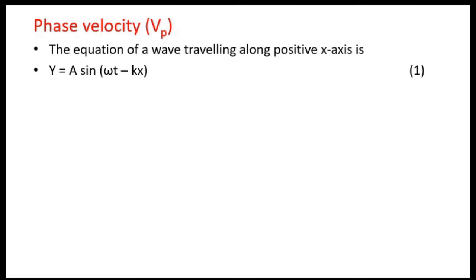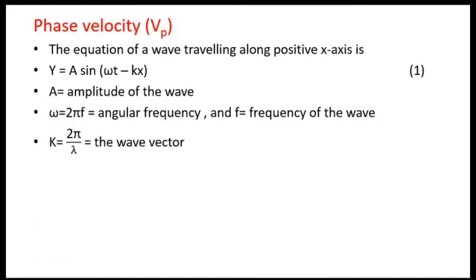We are familiar with the equation of a wave travelling in the positive x-axis direction. That wave is given by y = A sin(ωt − kx), equation 1. It represents a wave travelling along the positive x-axis. Here, A is the amplitude of the wave, ω is the angular frequency equal to 2πf, where f is the frequency. k = 2π/λ is called the wave vector.